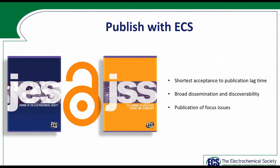ECS publishes four peer-reviewed journals devoted to electrochemistry and solid-state science and technology. The Society is committed to open access, peer-review standards, the shortest acceptance-to-publication lag times, broad dissemination and discoverability, and publication of special focus issues spotlighting what's hot. ECS publications contain high-impact research that becomes more relevant every day, and 65% of ECS's published work involves the sustainability of our planet.